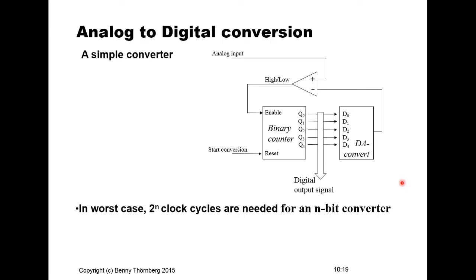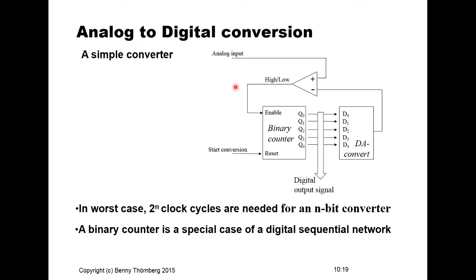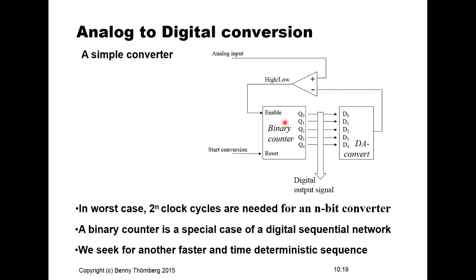In the worst case, you will need 2^n clock cycles for an n-bit converter to complete its conversion. This is a disadvantage because the conversion time is not deterministic — it depends on the level of the analog input. We therefore seek a faster, time-deterministic sequence that completes in a fixed number of clock cycles every time, regardless of the analog input level.